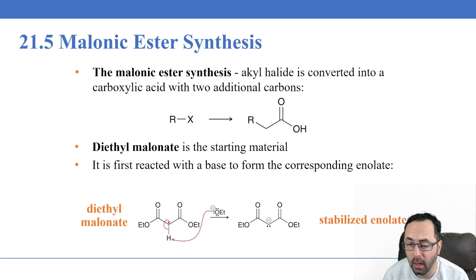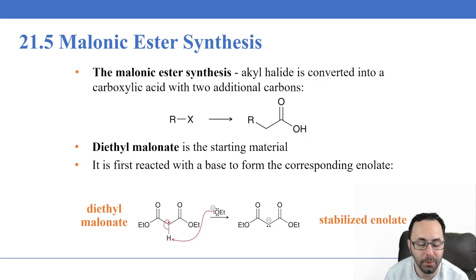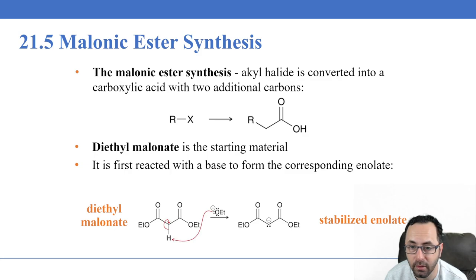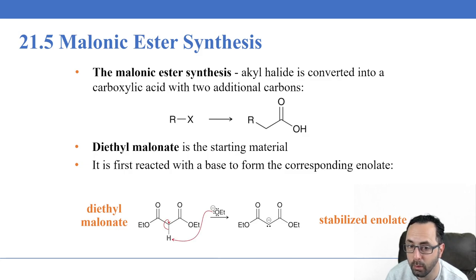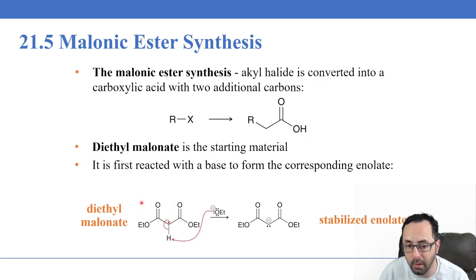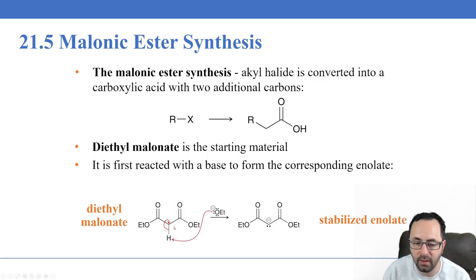Another important synthetic reaction is the malonic ester synthesis. In this case, we convert an alkyl halide into a carboxylic acid with two additional carbons. The starting material is diethyl malonate — a diester — and notice that the proton between the two carbonyl groups has a pKa of 9. We can fairly irreversibly remove this proton with ethoxide as the base. We use ethoxide — rather than a different base — to avoid nucleophilic substitution that would replace the ethoxy groups on the diethylmalonate.